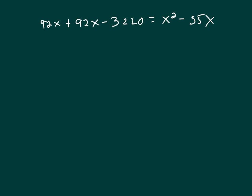And 92 plus 92 is 184. So 184X minus 3,220 is X squared minus 35X.